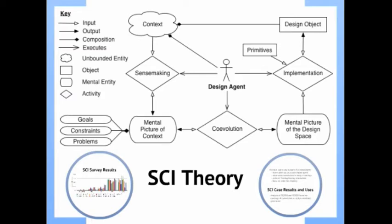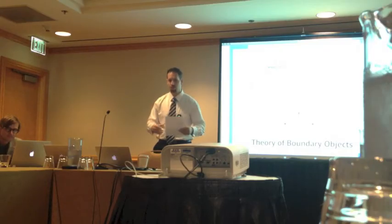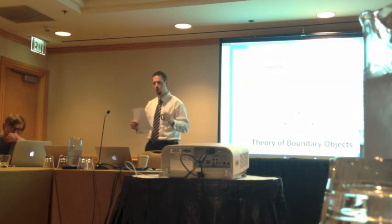The next theory is the theory of boundary objects — a sociological theory. A boundary object is something plastic enough to be used by different people in different contexts. If you draw a use case diagram and use it with a user focus group, and then use the same diagram to discuss the system design with developers, that's a boundary object. It crosses boundaries, retains its identity in different contexts, but is plastic enough to be used for different purposes. Developers externalize their cognition about the world into boundary objects for memory, communication, and managing complexity.